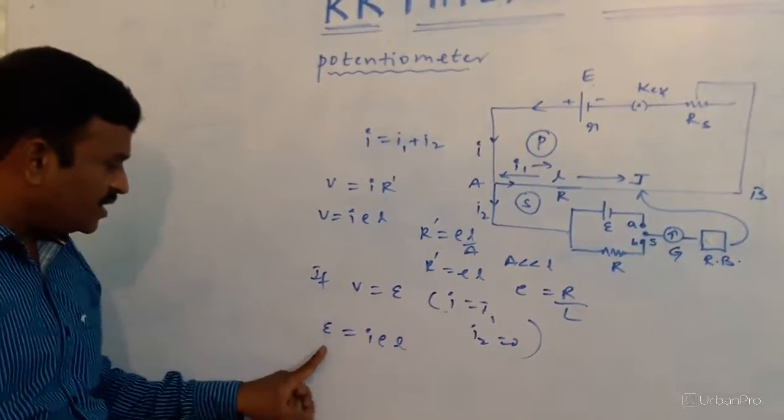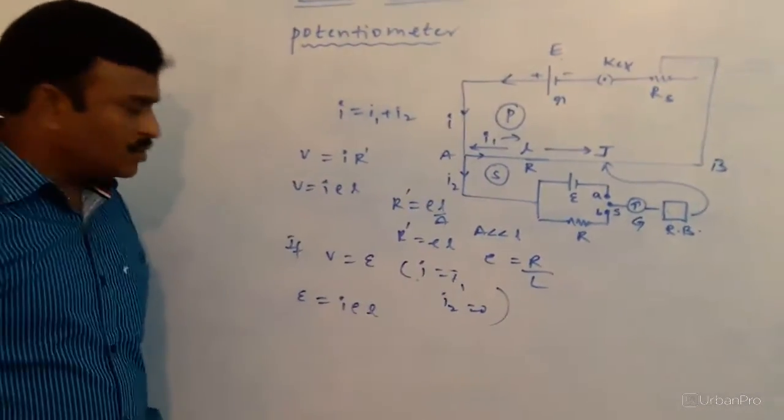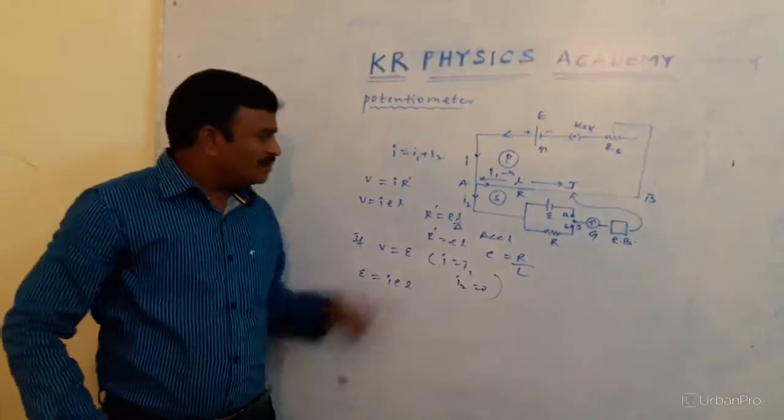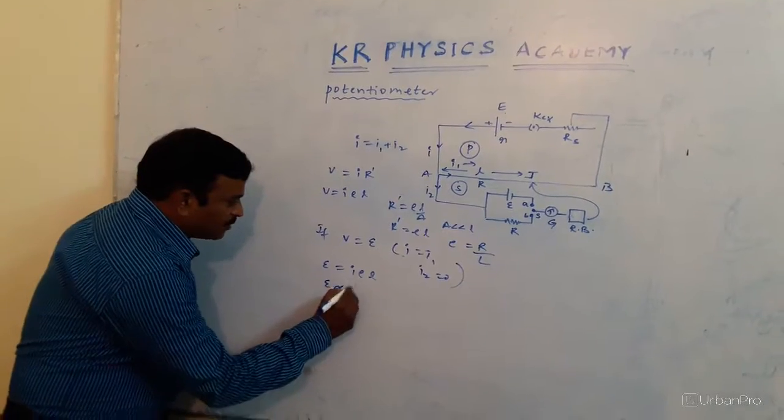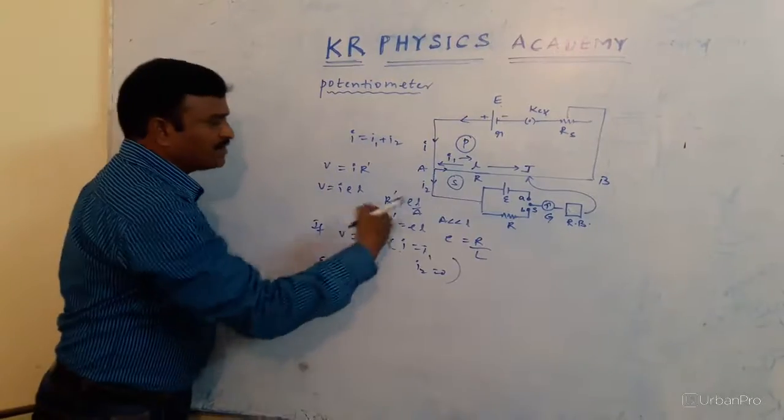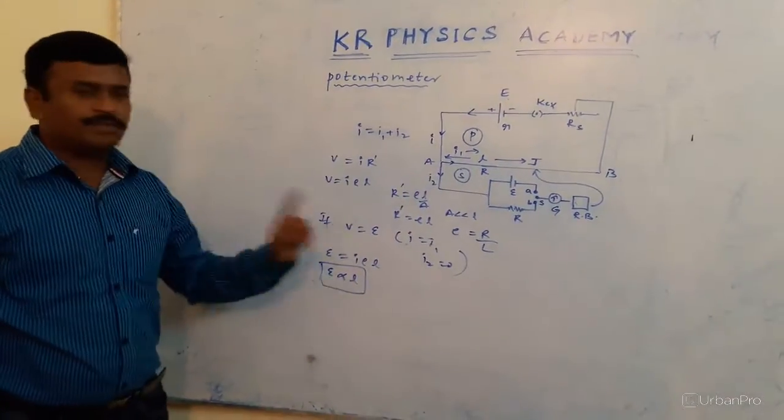Here, that is V equals E, E equals I ρ L. Here, I is the current which is coming from the primary circuit, ρ is the specific resistance, L is the balancing length. So, E is directly proportional to L. More EMF, more balance. In such a manner, E will be proportional. This is the principle of the potentiometer.